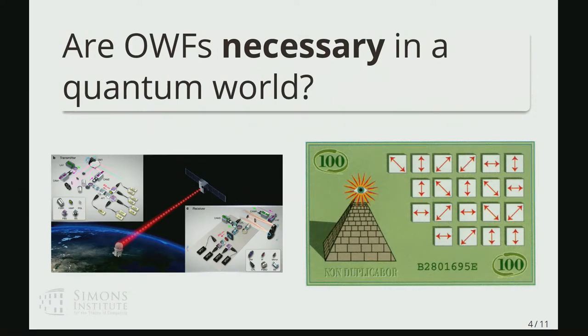So it's an information theoretic proof, relies on no computational assumptions. This is obviously something that we cannot do classically, right? Classically, if you want key distribution, then you need to make some sort of computational assumption.